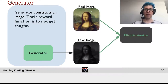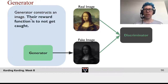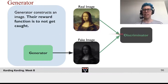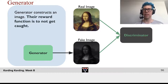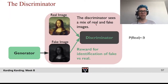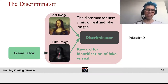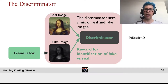Let's talk about how it works. We have a generator that constructs an image. The reward function of the generator is that the discriminator cannot distinguish it from the real image. The output of the generator is a fake image, which is then handed to the discriminator along with a set of real images. The discriminator asks: is this a real image? The discriminator gets both a fake image and a real image and sees a mix of those.